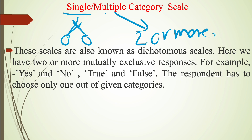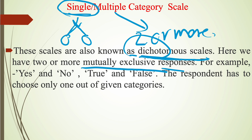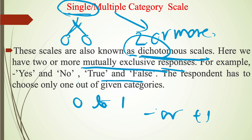Single or multiple category scales are also known as dichotomous scales. Why dichotomous? Because we have two options in this case. The word used is single, but options given are two minimum, or more than two for the multiple category scale. These scales have two or more mutually exclusive options or responses. Mutually exclusive means just opposite responses — for example, yes or no, true or false, zero or one, minus one or plus one.